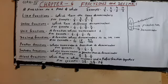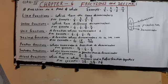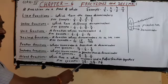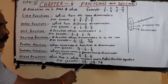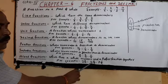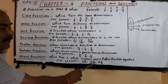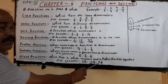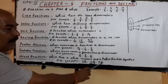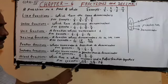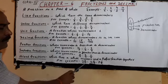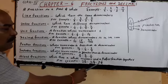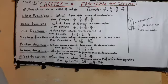Next, mixed fraction. What is a mixed fraction? It is one which has a whole number and a proper fraction together. For example, 2 whole 3 by 4, where 2 is the whole number and 3 by 4 is the proper fraction; 4 whole 6 by 7; 7 whole 1 by 9.